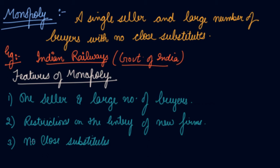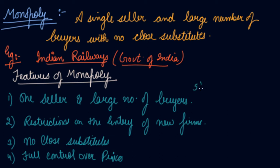The fourth feature is full control over prices. It is the wish of the monopoly seller what price they want to sell the product at. It is the wish of Indian railways whenever they want to increase the fare — they increase the fare of First AC, Second AC, and so on. They are the monopoly in the market and can ask for any price they want.